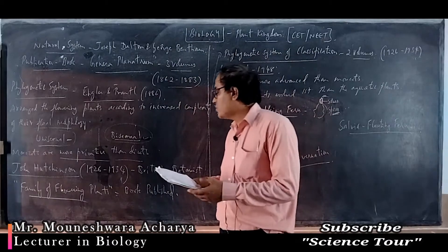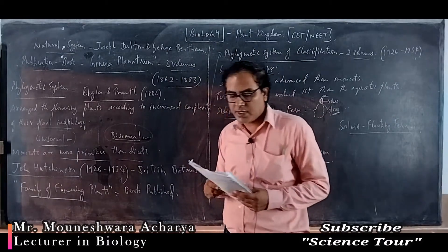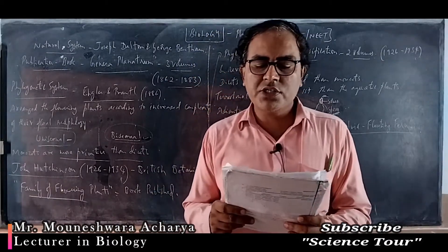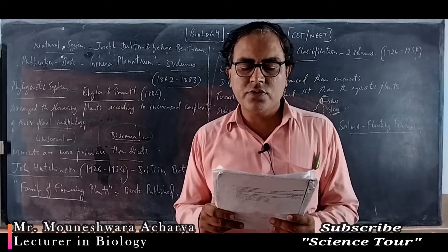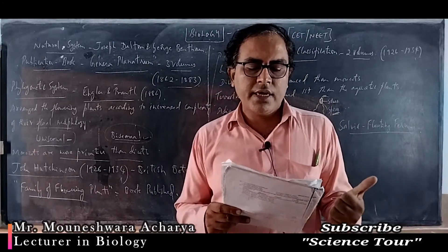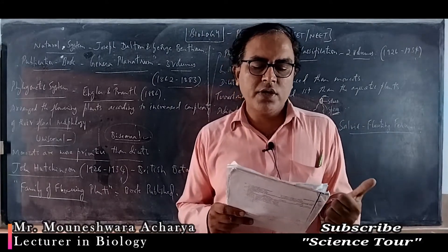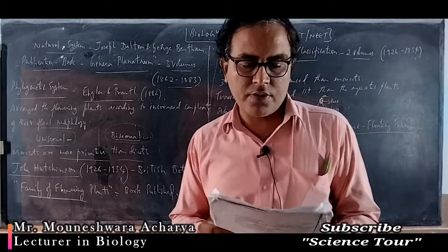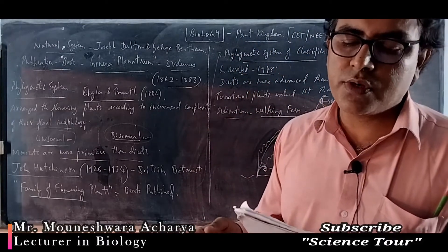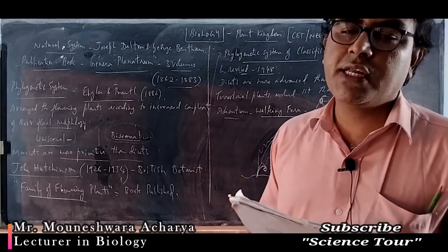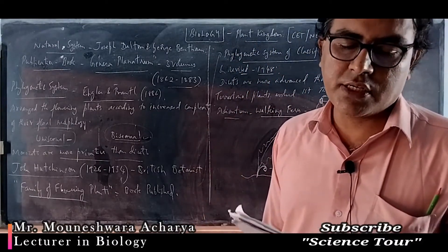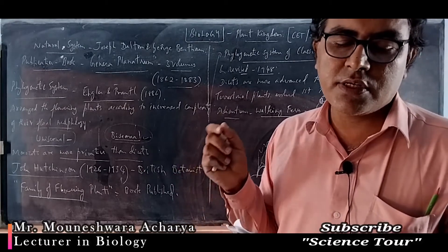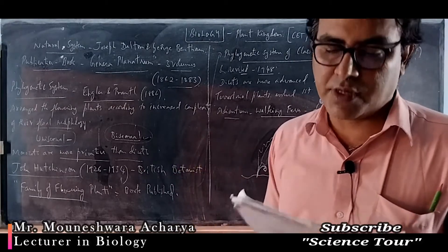Moving to another worksheet with around 30 questions. Question 1: Classification on the basis of chemical constituents of plants is called chemo taxonomy.